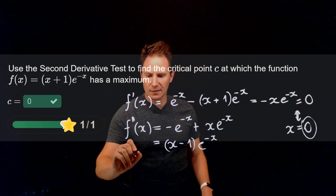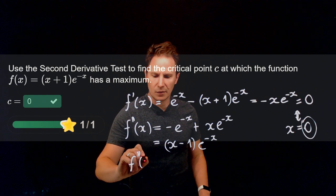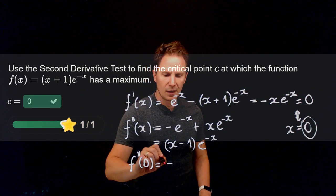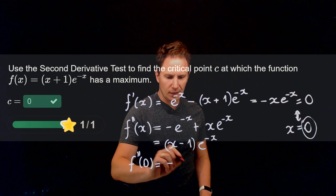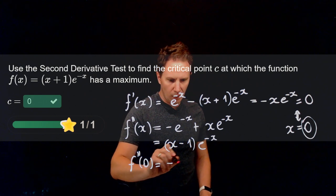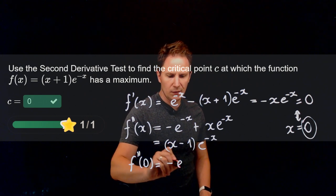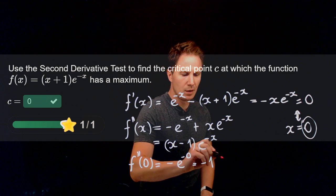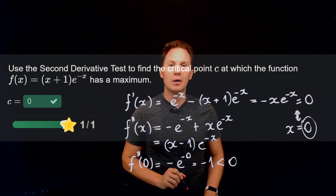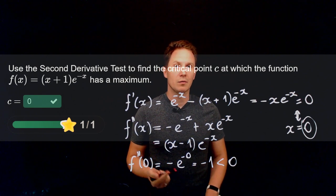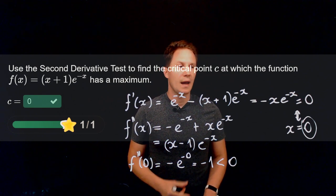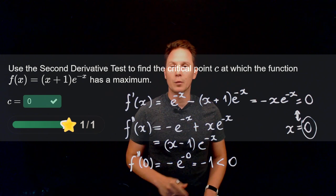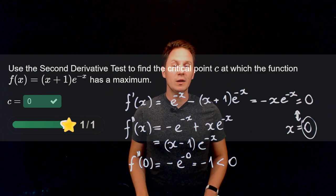Evaluating the second derivative at the critical point x = 0, we get (0-1)·e^0 = -1, which is a negative number. Therefore, by the second derivative test, we have a maximum at the critical point x = 0. I hope you enjoyed this video and I'll see you in the next one.